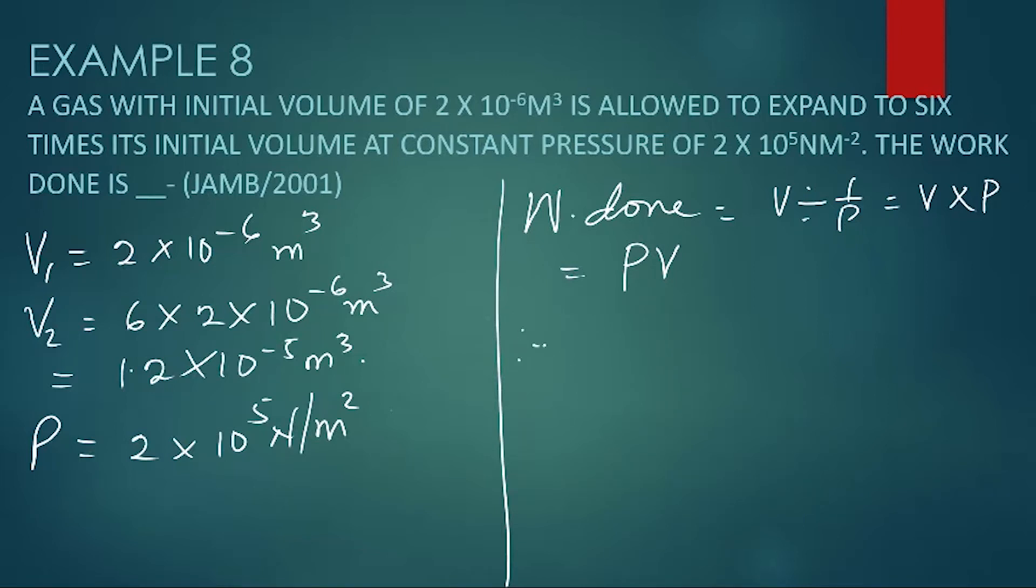That means the pressure, which is 2 times 10 raised to the power of 5, we multiply the change in volume, which is 1.2 times 10 raised to the power of minus 5 minus 2 times 10 raised to the power of minus 6.